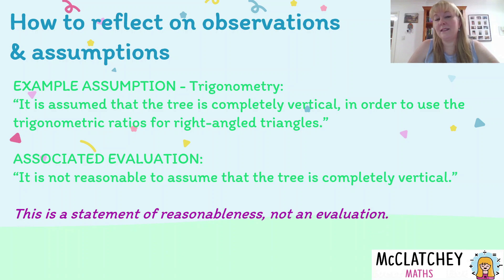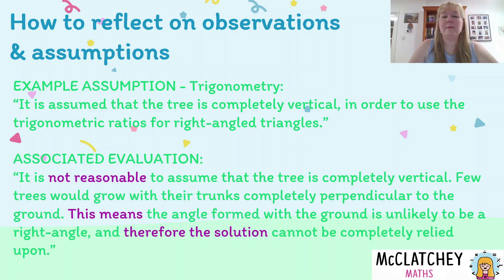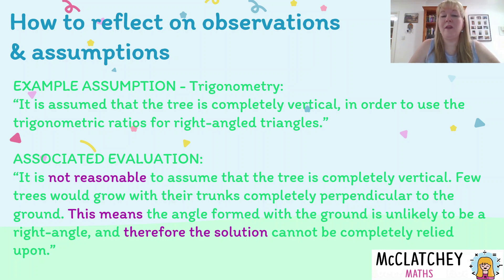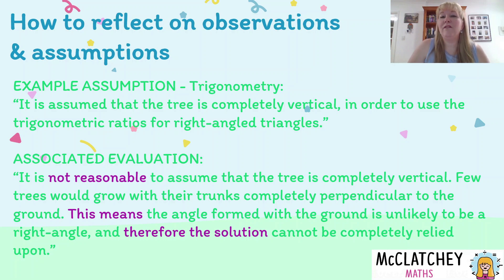To turn that statement into a full evaluation, you elaborate: 'It is not reasonable to assume that the tree is completely vertical. Few trees would grow with their trunks completely perpendicular to the ground. This means the angle formed with the ground is unlikely to be a right angle, and therefore the solution cannot be completely relied upon.' Notice the phrase 'this means' — it signposts to the teacher that you are explaining how the assumption affects the results and therefore the solution. That language shows you've related it back to the problem.